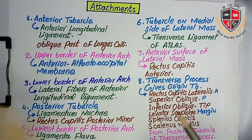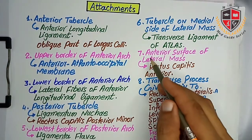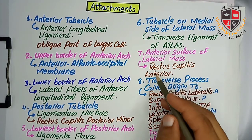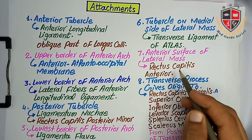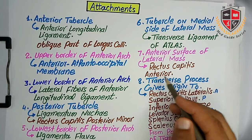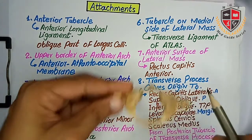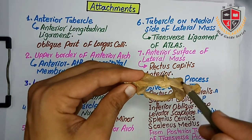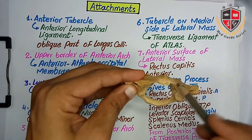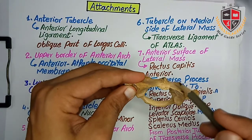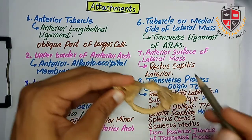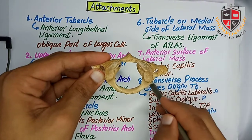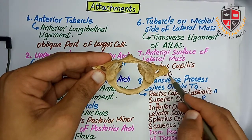The anterior surface of the lateral mass gives attachment to the rectus capitis anterior muscle.